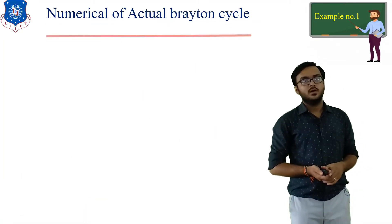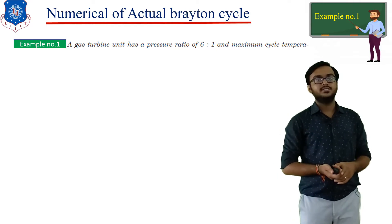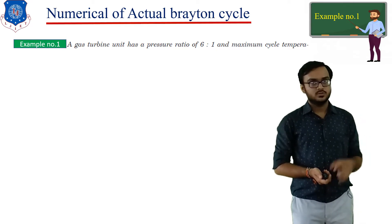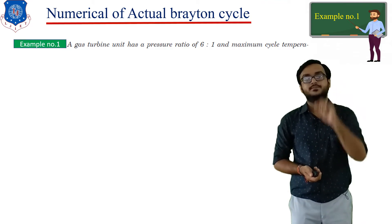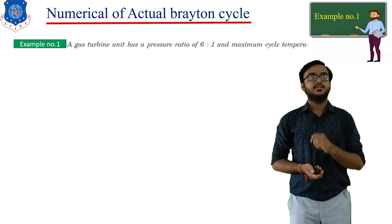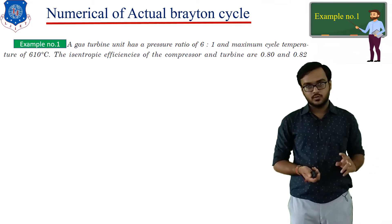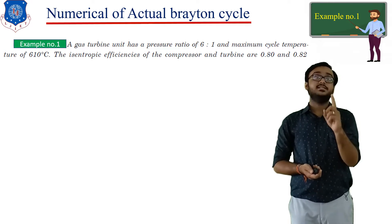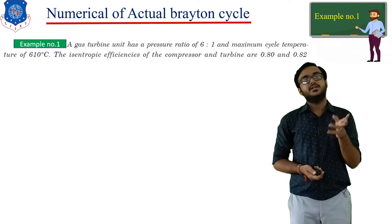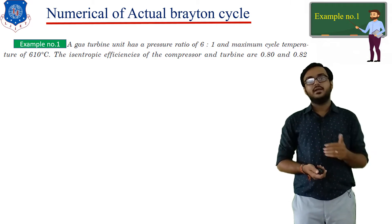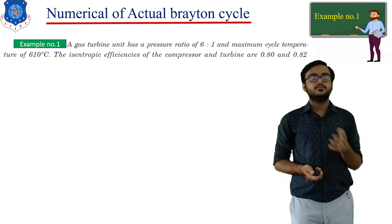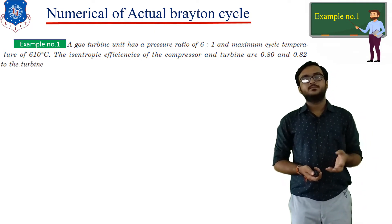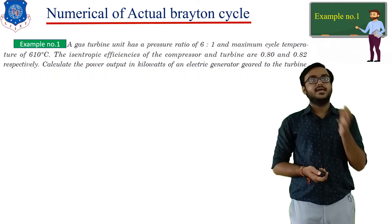Numerical number 1. Given data: a gas turbine unit has a pressure ratio of 6:1, so P2 by P1 is equal to 6. The maximum cycle temperature is 610 degrees centigrade, so T3 is 610°C. The isentropic efficiency of the compressor and turbine are 0.80 and 0.82 respectively — turbine efficiency 82%, compressor efficiency 80%.